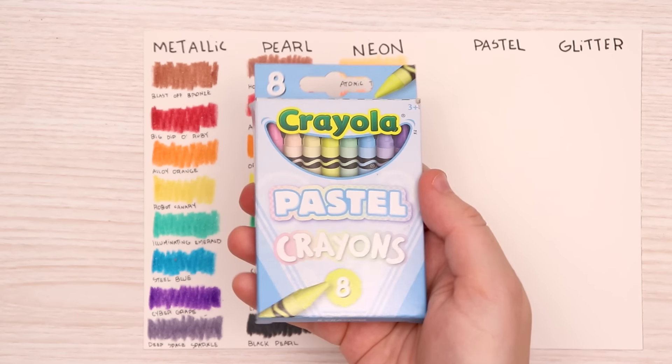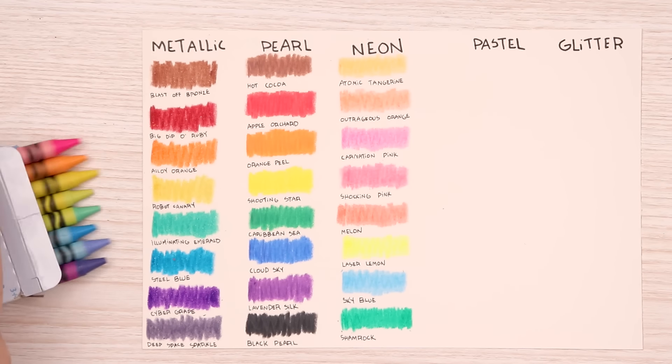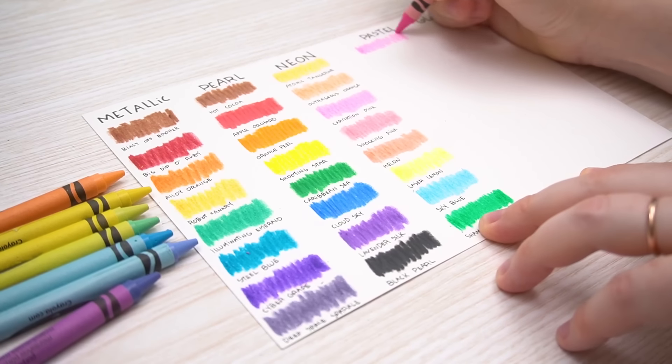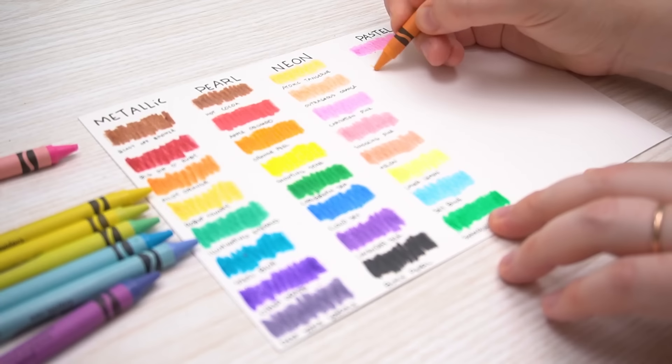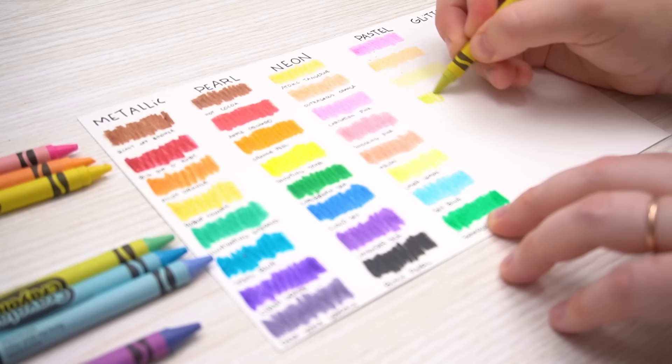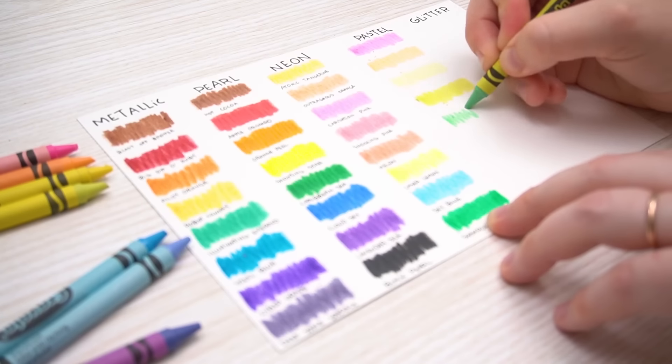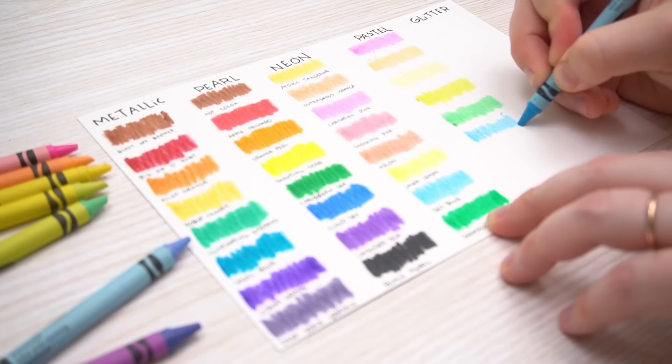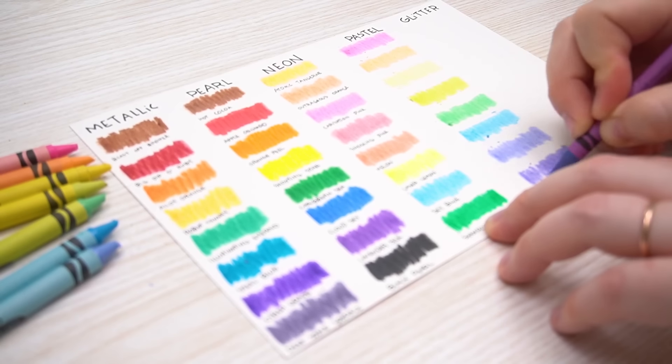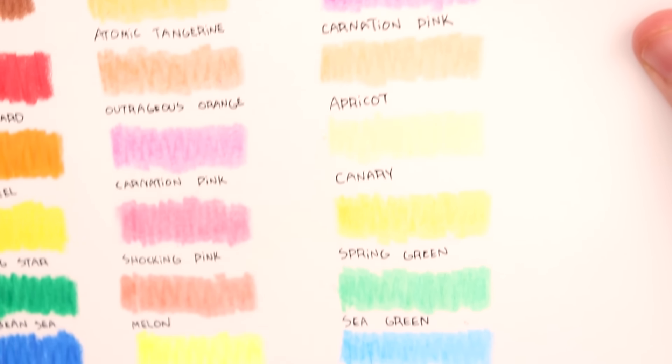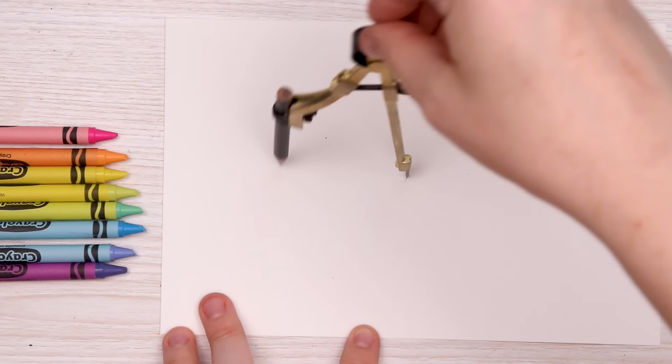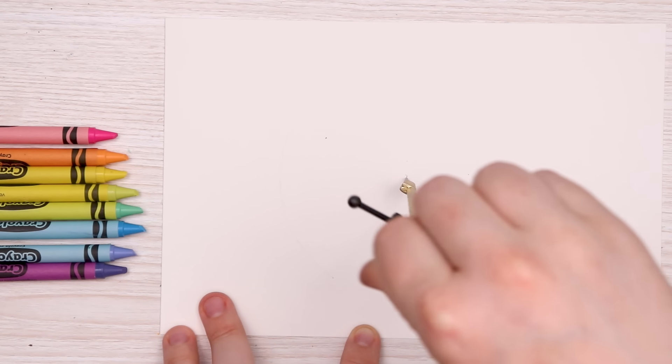Next up we have our pastel crayons and weirdly I was actually really looking forward to them. They just look so soft and cute and I think I've actually kind of been sort of experimenting with pastels lately. We have another repeat of a color. We have carnation pink that was also in the neon. Sky blue was also in the neon. This time we have normal canary not robot canary. And I really like that spring green. It's kind of like a sickly barf color. So that means I love it.